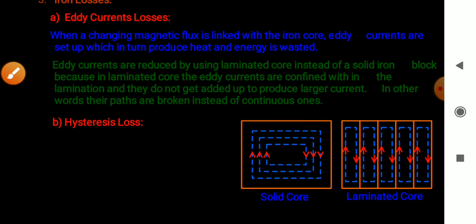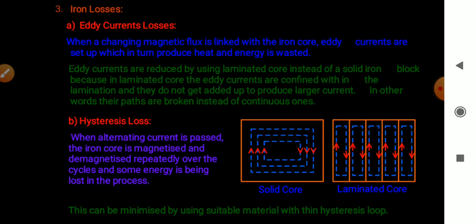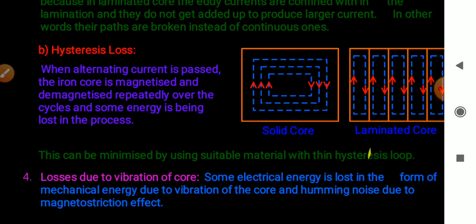The next iron loss is hysteresis loss. When alternating current is passed, the iron core is magnetized and demagnetized repeatedly over each cycle, and some energy is lost in this process. This can be minimized by using suitable material with thin hysteresis curves. Additionally, some electrical energy is lost in the form of mechanical energy due to vibration of the core and humming noise due to the magnetostriction effect.